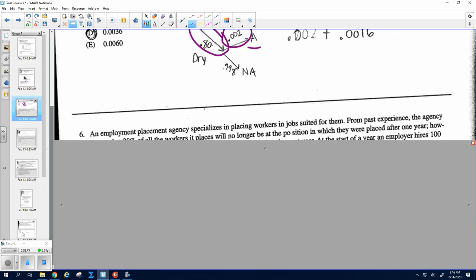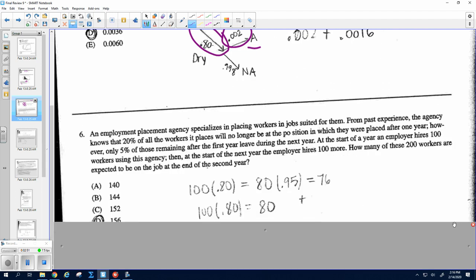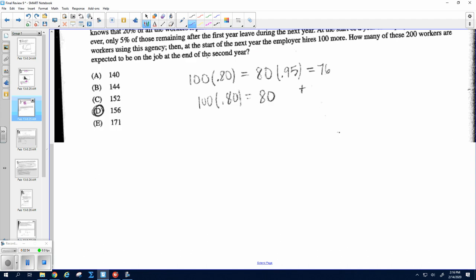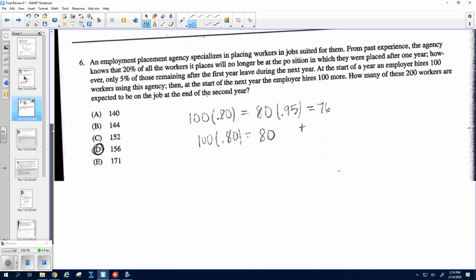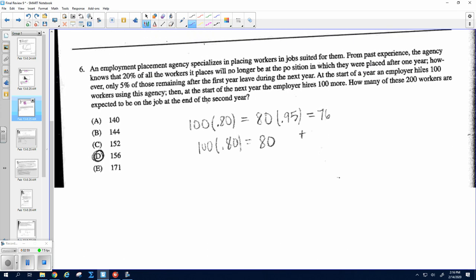Okay, number six. So this one's just kind of a tough read, I felt like. They are talking about two years. So you hire 100 people who are going to stay for two years, and for those 100, 20% no longer work there. That means you keep 80% of them. So at the end of the first year, there are 80 workers. And then on that second year, only 5% quit, which means you're going to retain 95% of them. So 80 times 95%. This gives us the final number of people after two years of that first group.